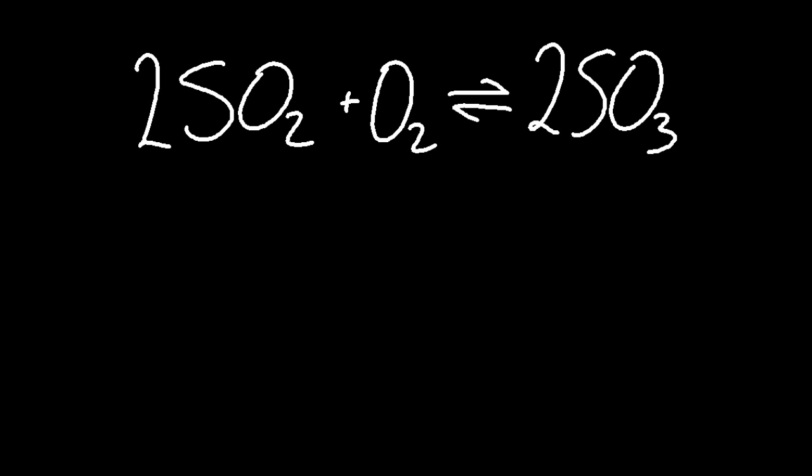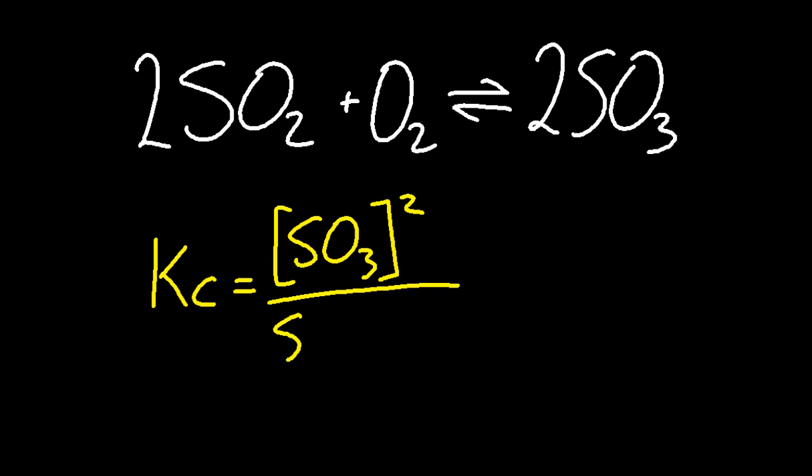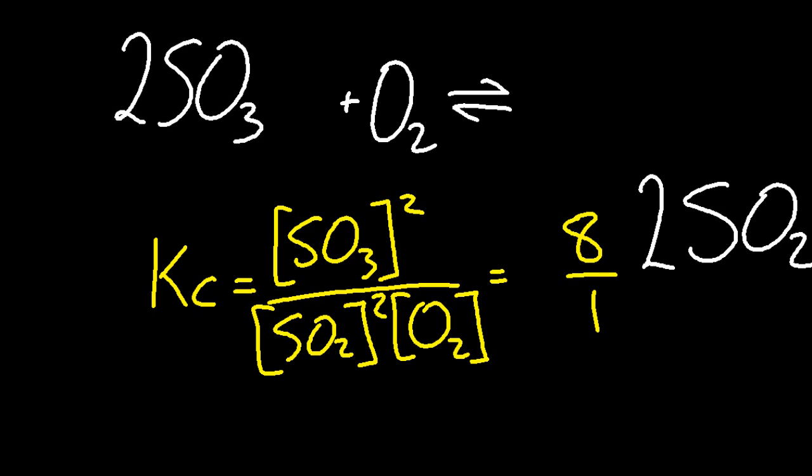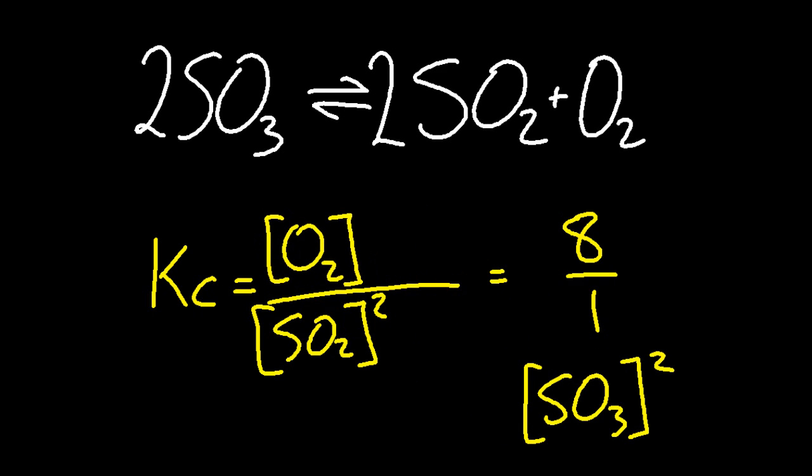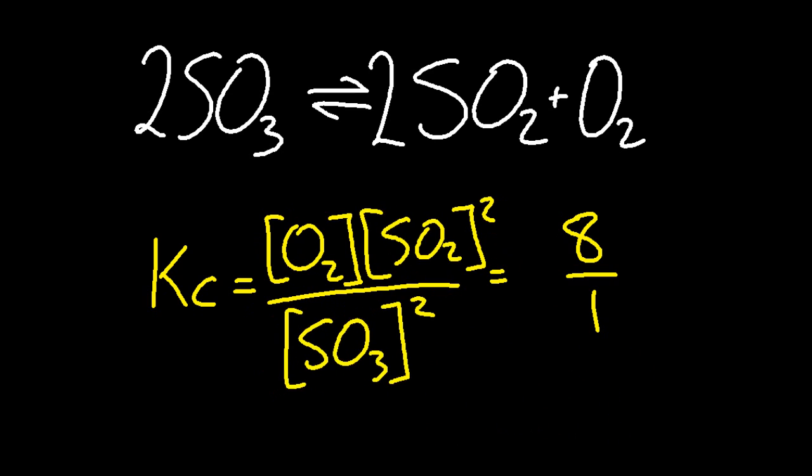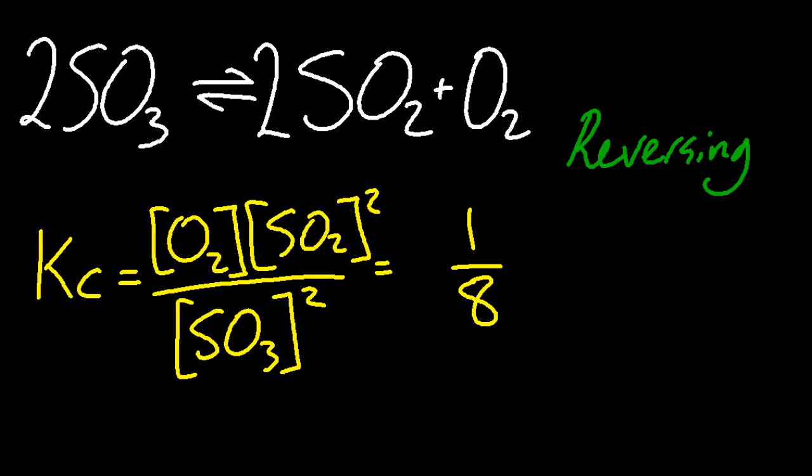What if an equilibrium is reversed? This is the classic contact process again. Let me write out the equation for Kc, and let's say the value is 8. Now if I reverse the equilibrium, I'm going to have to invert Kc, and the value for Kc is also inverted, so it's now 1/8. Reversing an equilibrium or reversing an equation inverts Kc.